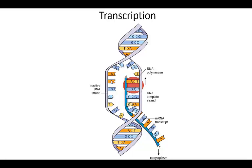Wherever you have a T in the template, the A is going to bind. If there's a G in the template, a C would bind. Down here, where there's an A, you have to have a U — not a T — because there is no thymine in RNA; it has to be a uracil instead. And as this moves forward, this T would bind to an A, this C would bind to a G, this G would bind to a C, and so on.